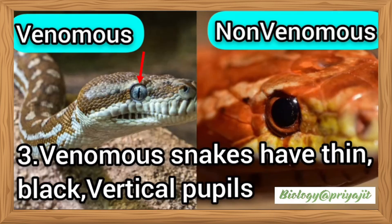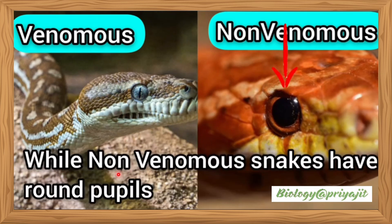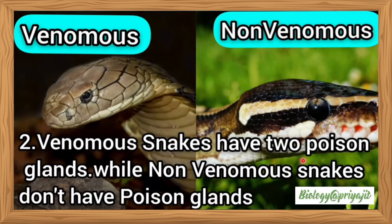Seventh, venomous snakes have small scales on their head, while non-venomous snakes have large head scales. Eighth, venomous snakes have a thin black vertical pupil. Ninth, venomous snakes have two poison glands, while non-venomous snakes don't have poison glands.